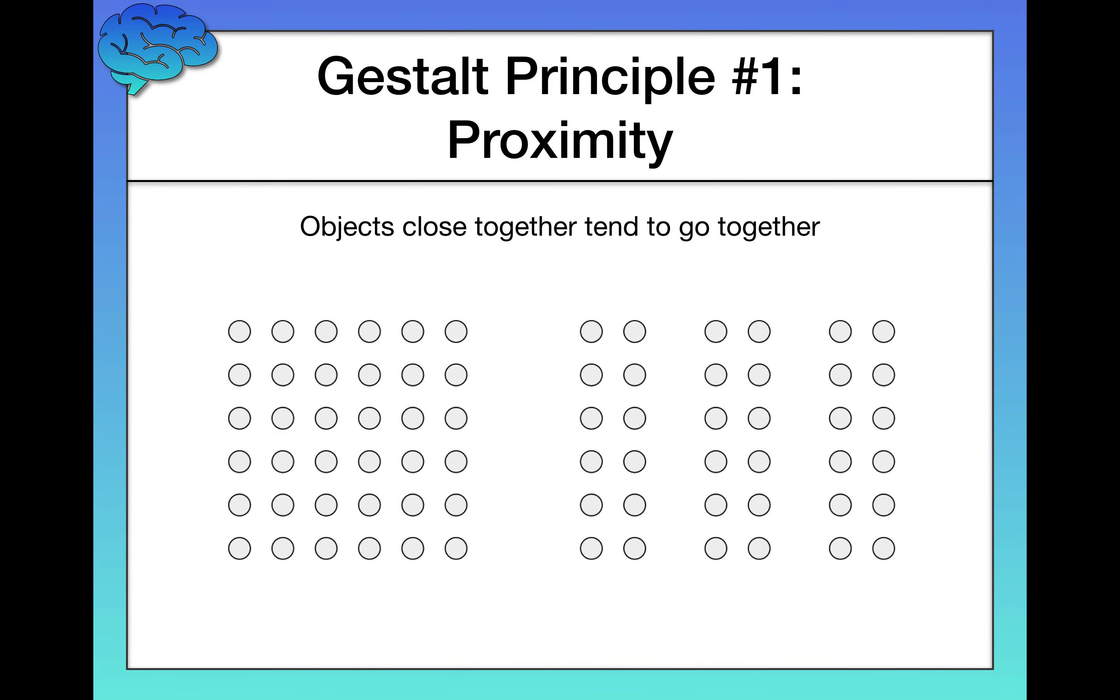The first Gestalt principle is known as proximity. This is the idea that objects that are closer together tend to go together. If you look at the left side of the screen, for example, you would probably perceive this whole object as a single object, right? One big square of dots.